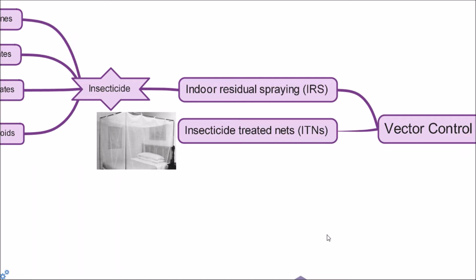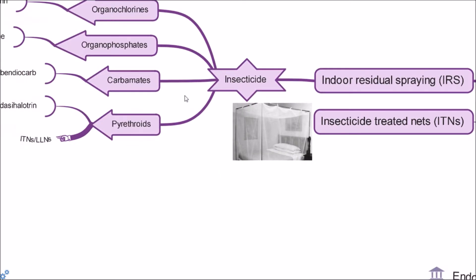Insecticide-treated nets. Nets form a protective barrier around people sleeping under them. However, bed nets treated with an insecticide are much more protective than untreated nets by using less toxic, environmentally friendly insecticides such as pyrethroids. Insecticide-treated nets are considered to be affordable and easy to administer.